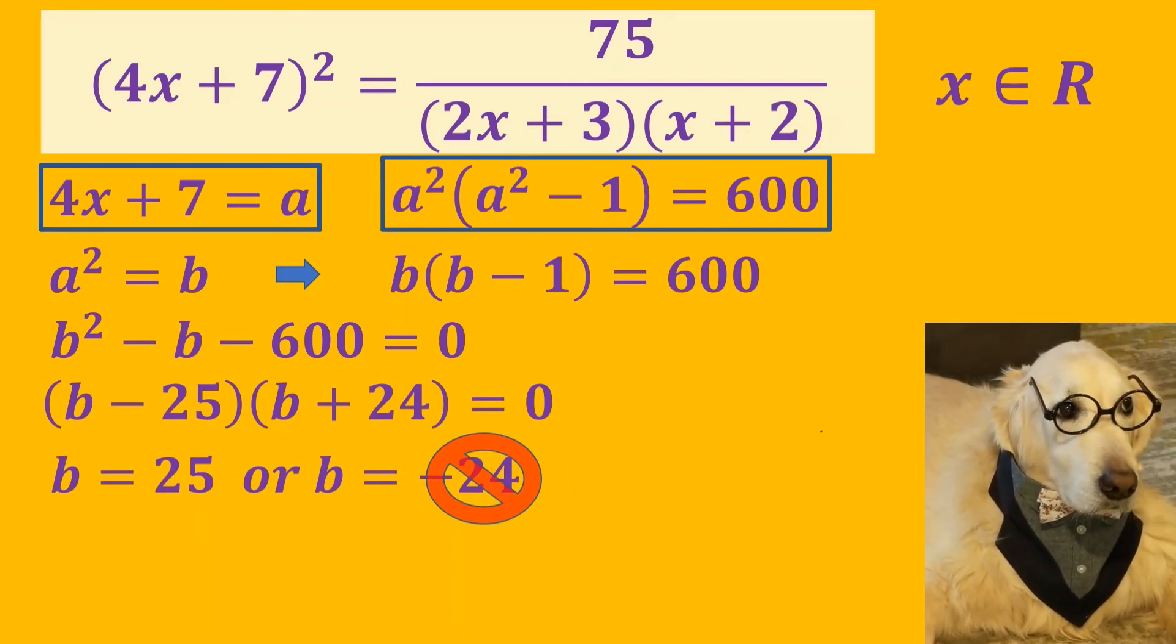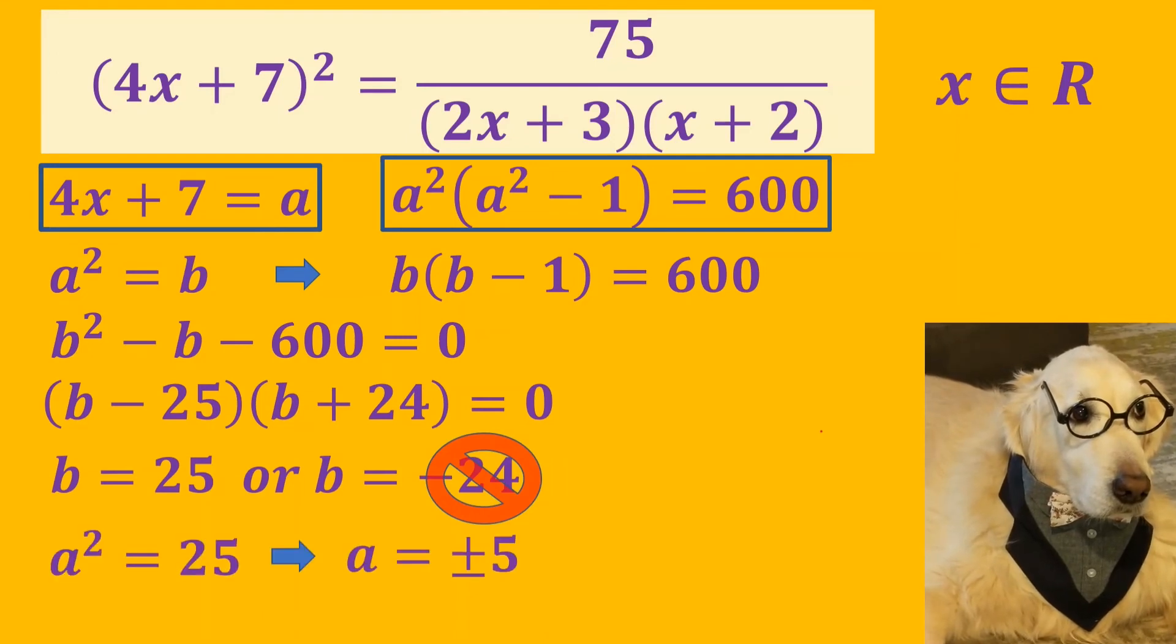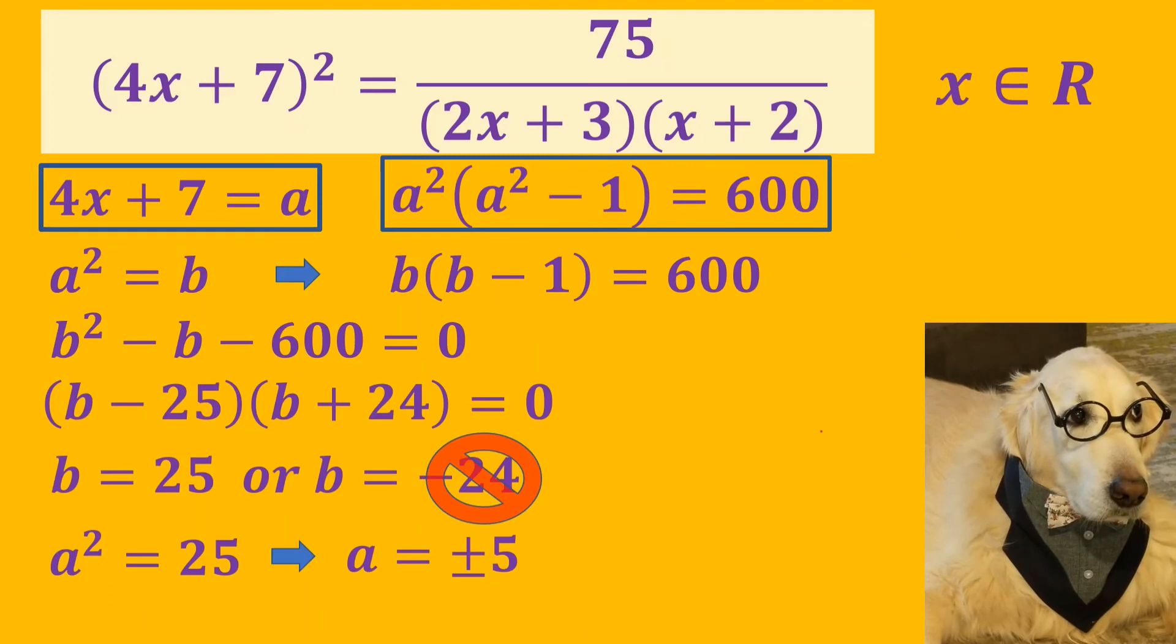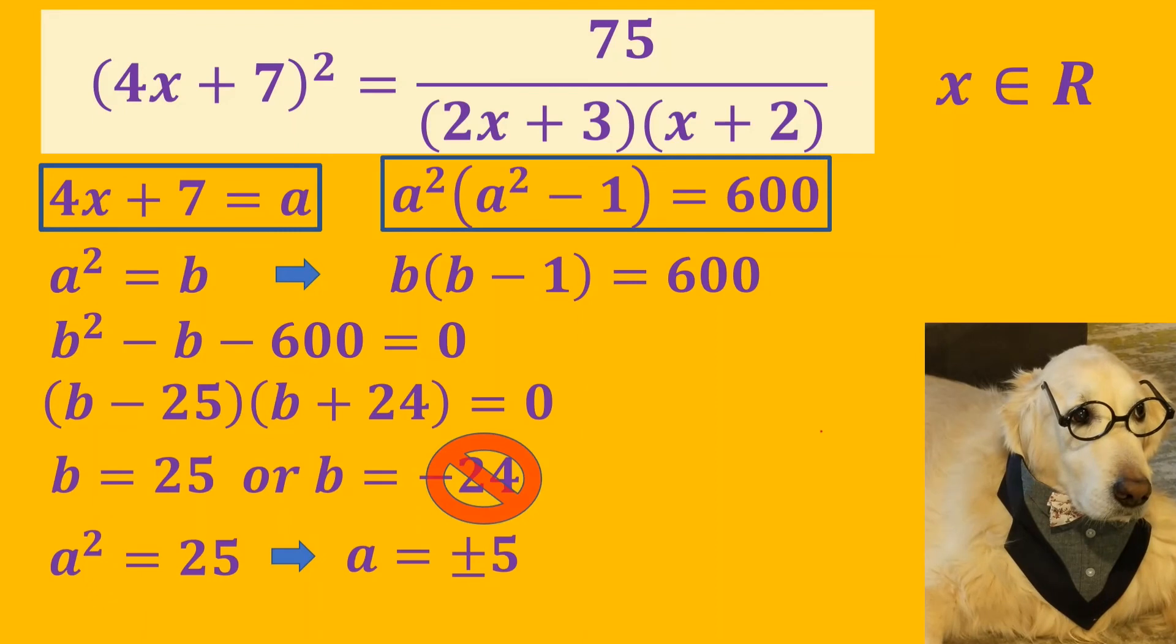Because x is a real number, we can say that a² is 25, and a is equal to ±5.